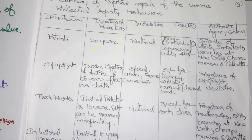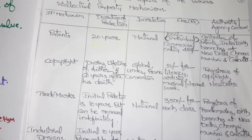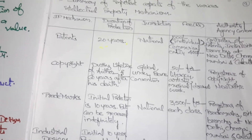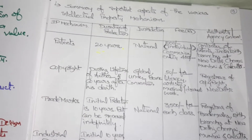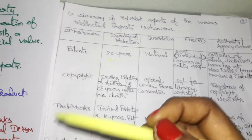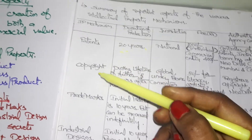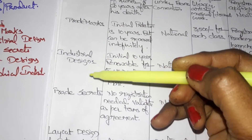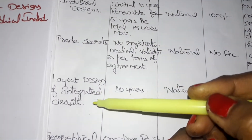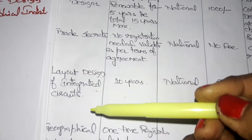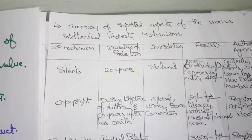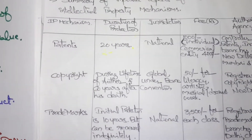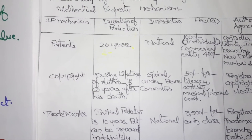The various intellectual property mechanisms listed are: patent, copyright, trademark, industrial design, trade secret, layout design of integrated circuit, and geographical indications. We will now go through each one starting with patents.